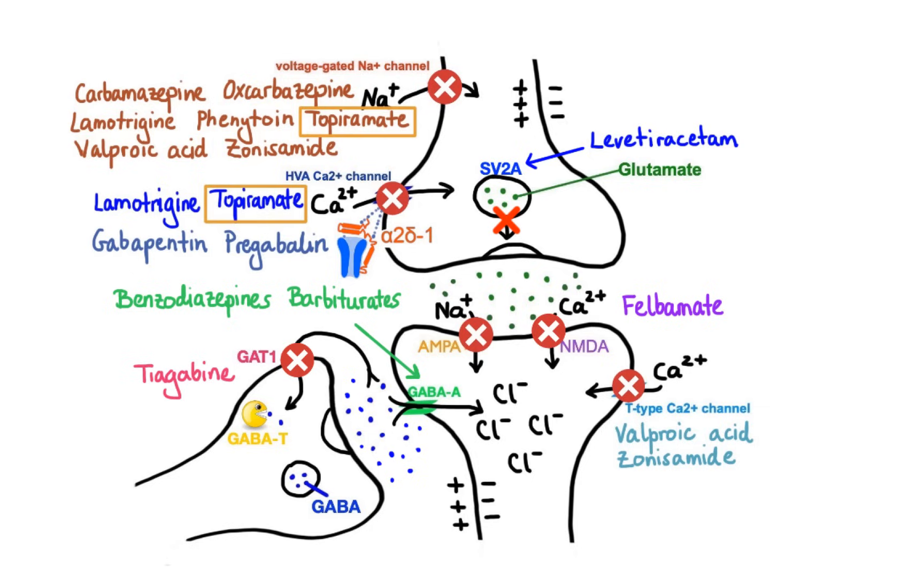Last but not least, we have drug called Vigabatrin which irreversibly inhibits GABA aminotransferase, the enzyme responsible for catabolism of GABA, thereby effectively increasing the concentrations of GABA in the brain.